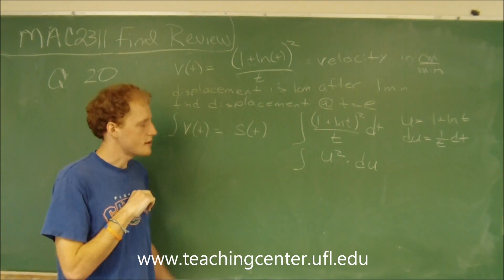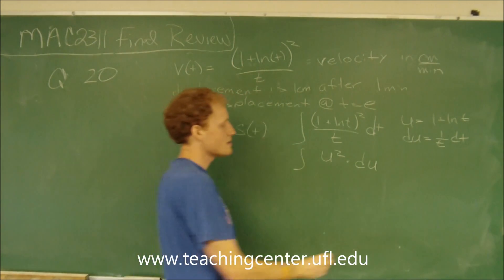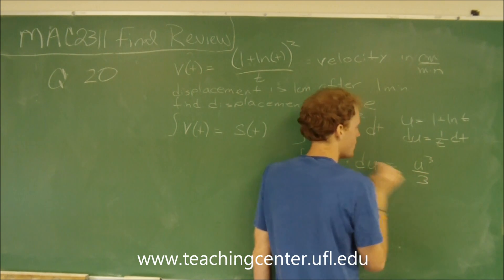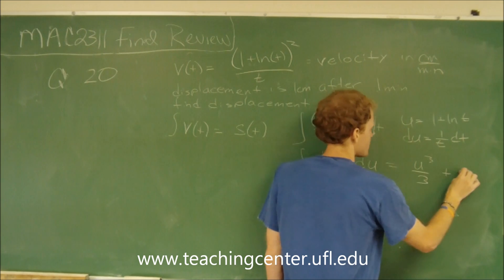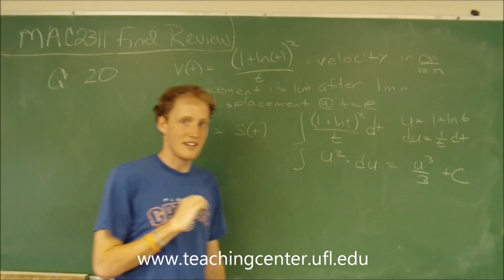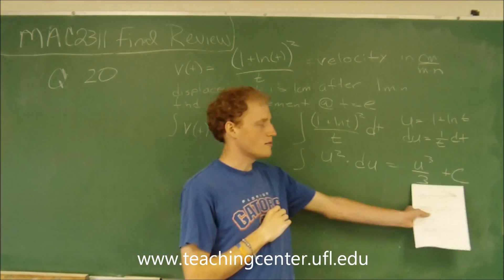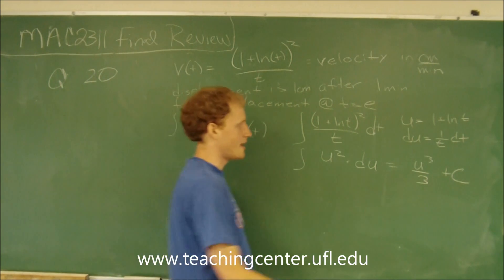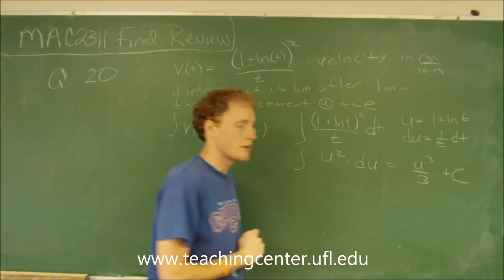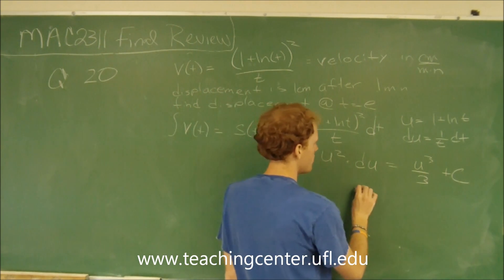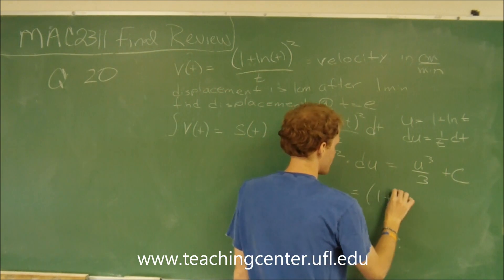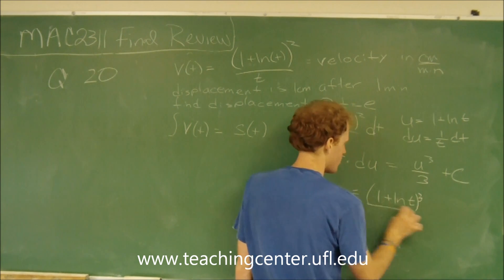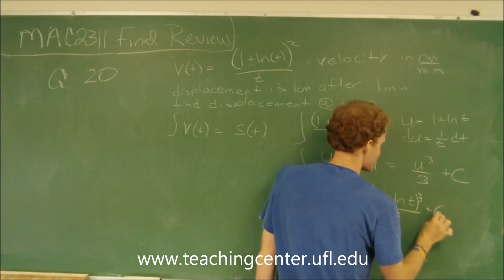When we replace everything in, we have the antiderivative of u squared times du. The antiderivative of this is u cubed over three, plus C. Since it's an indefinite integral, we use plus C. Plugging our u back in, we get 1 plus the natural log of t, cubed over three, plus C.